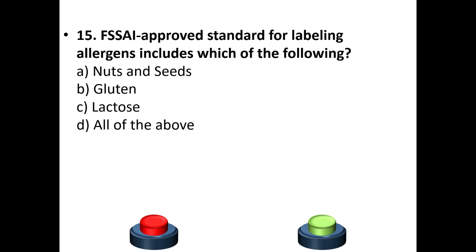Fifteenth question: FSSAI approved standards for labeling allergens include which of the following? Options: nuts and seeds, gluten, lactose, all of the above. Your answer is option D: All of the above.